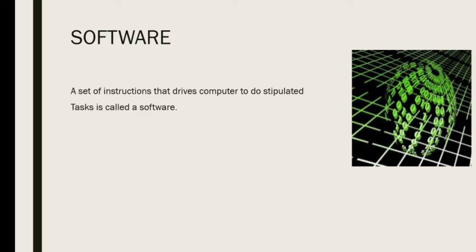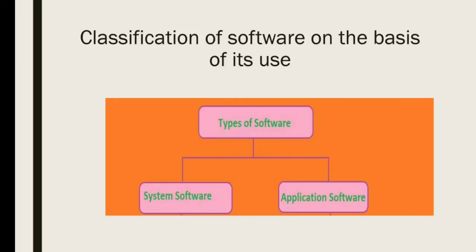Without software, the hardware of a computer would have no function, and without hardware, software will be useless. Software is classified into two categories on the basis of its use: System Software and Application Software.